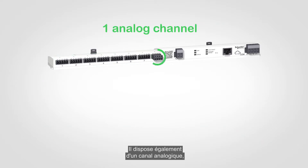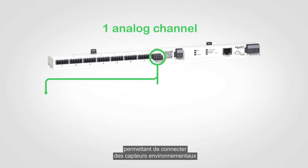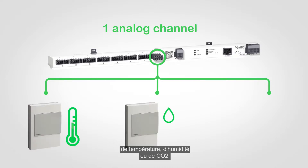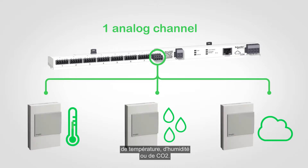SmartLink Elec also has one analog channel, which allows connection to environmental sensors for temperature, humidity, or CO2.